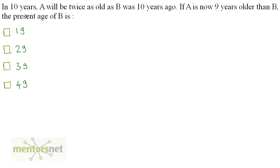In 10 years, A will be twice as old as B was 10 years ago. If A is now 9 years older than B, the present age of B is? A is now 9 years older than B, so I can write A equals B plus 9.